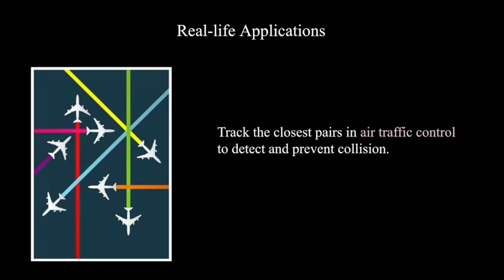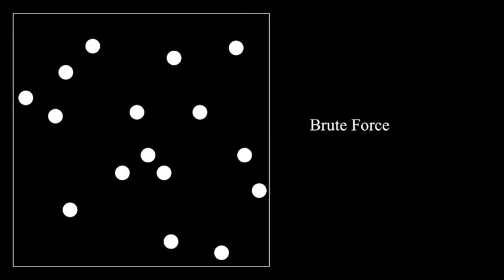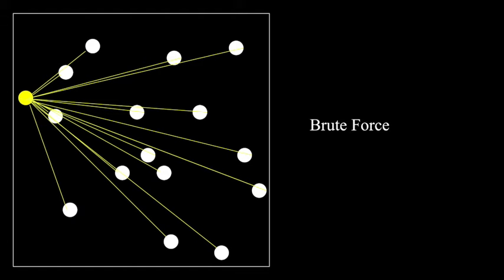This algorithm has a lot of real-life applications, one of which is collision detection in air traffic control. Now back to the problem. It is easy to come up with a brute force solution. Just look at every single pair of points and find the closest one. This gives us a running time of O(n²), which is not that efficient.